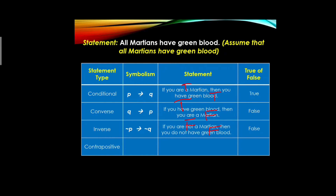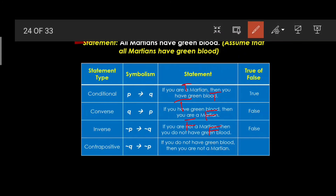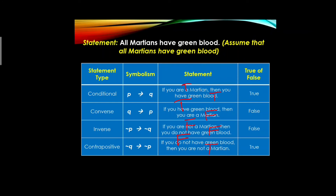For the contrapositive (∼q → ∼p): 'If you do not have green blood, then you are not a martian.' From the converse, the hypothesis was true (negated → false) and the conclusion was false (negated → true). Since the conclusion is true, the truth value of the contrapositive is true.